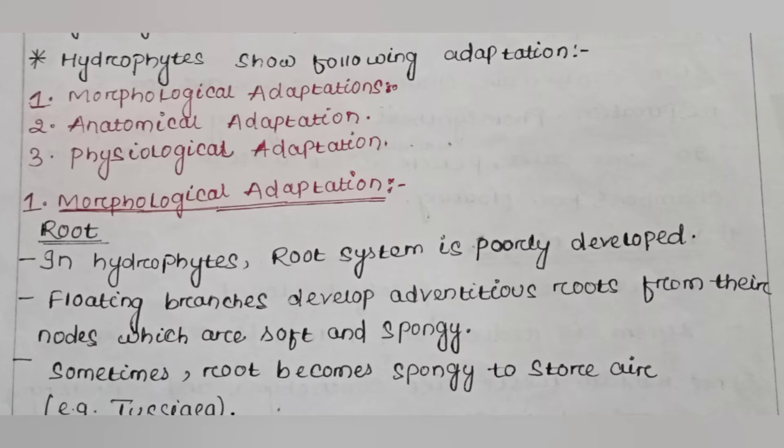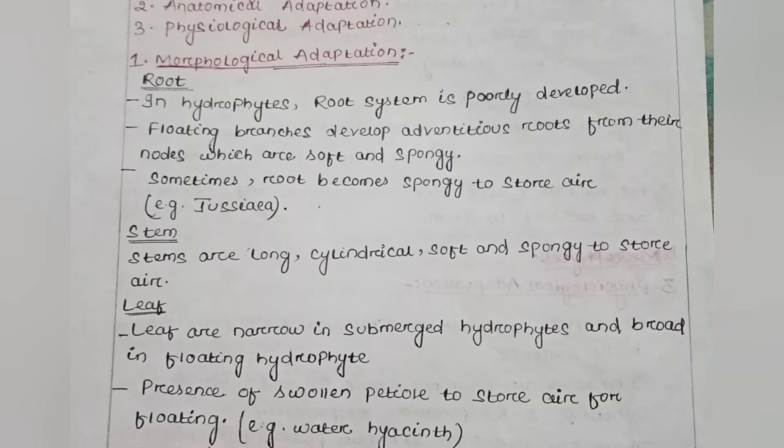Under morphological adaptation, the root system is poorly developed in hydrophytes — there is no well-developed root system. The floating branches develop adventitious roots from their nodes, which are soft and spongy. Some roots become spongy to store air. The stem of hydrophytes is long, cylindrical, soft, and spongy to store air.